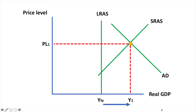If the previous position was short-run and long-run equilibrium, then this could have been the result of an increase in consumption, investment, government spending or net exports.